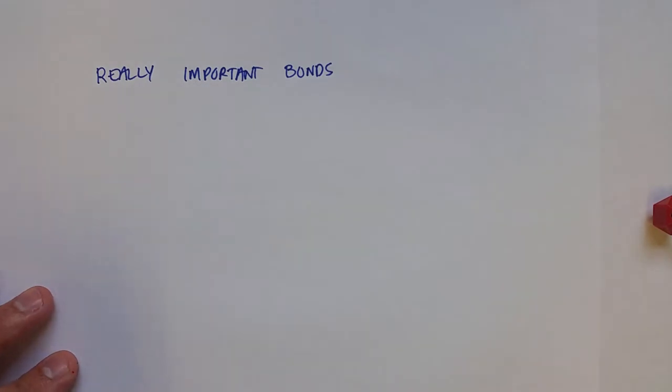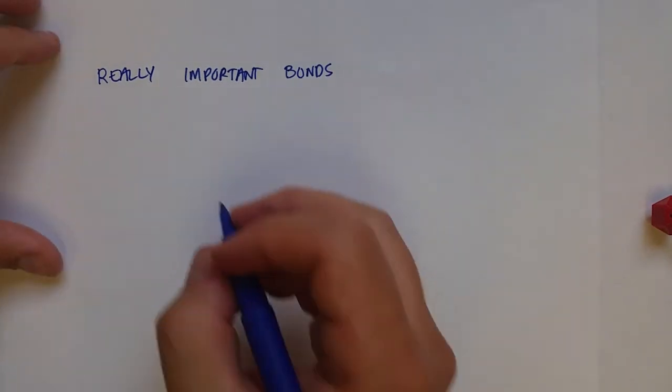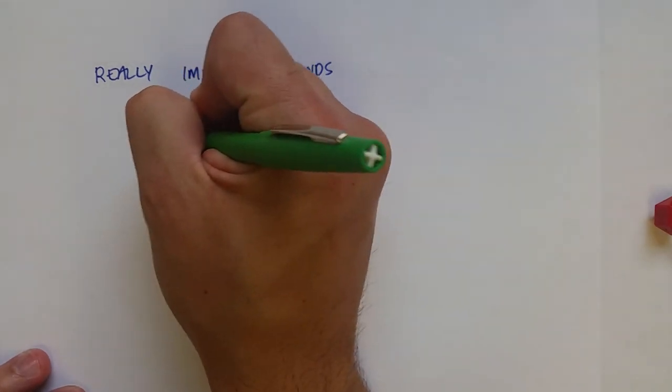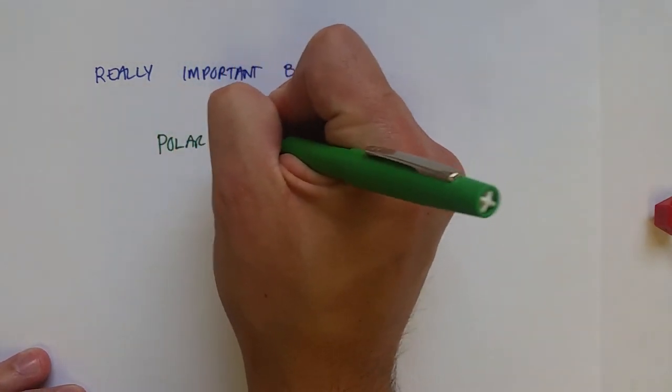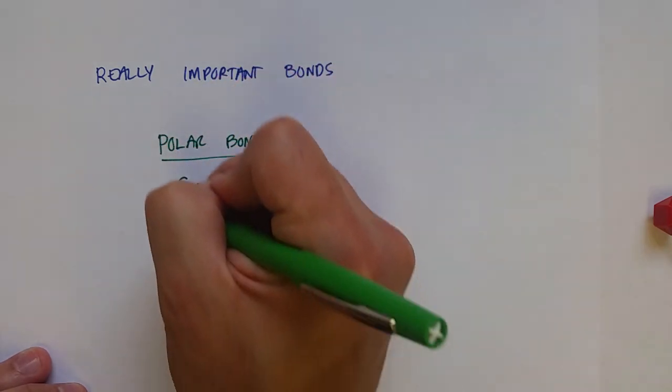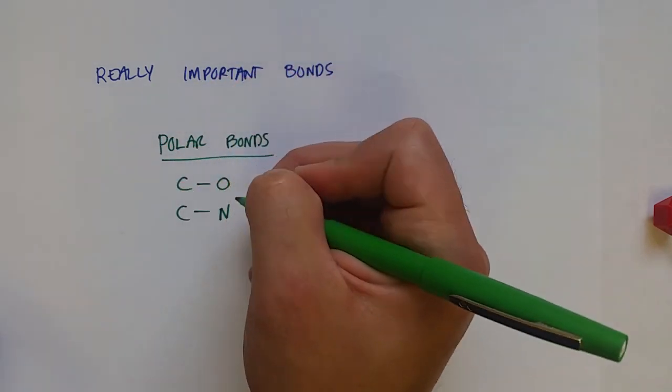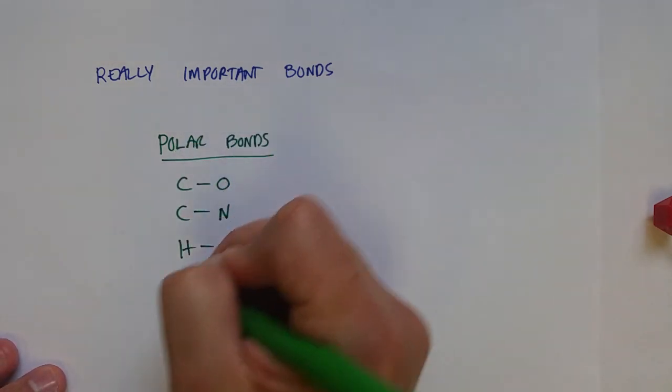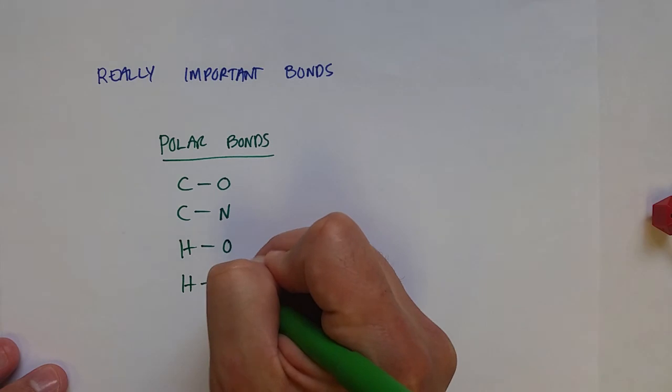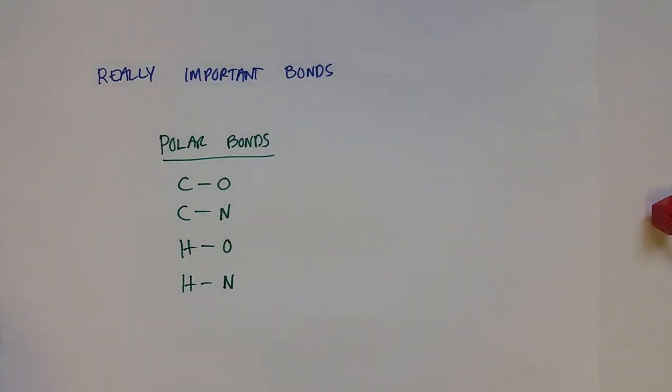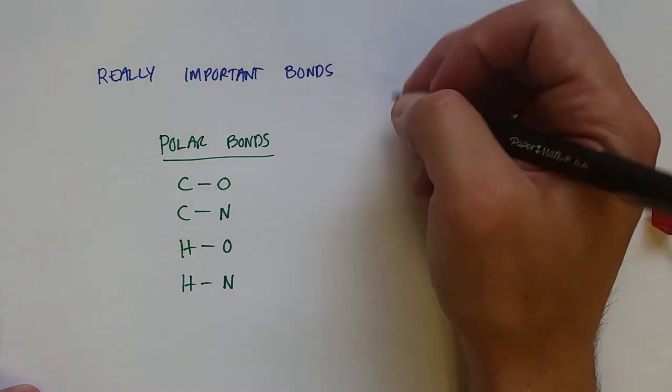But when you see these bonds, you can immediately know whether or not they're polar or nonpolar. So our polar bonds are between carbon and oxygen, carbon and nitrogen, hydrogen and oxygen, and hydrogen and nitrogen. These make up a lot of bonds in our body. And so that's why they're important.